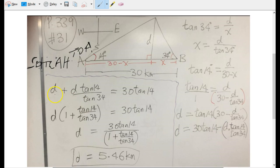Then we can distribute. Tan 14 times 30 is 30 tan 14, tan 14 times d over tan 34 is d times tan 14 over tan 34. We want to put this on top because these are numbers we can actually plug into our calculator, but this is a variable so we want to keep the variable out.